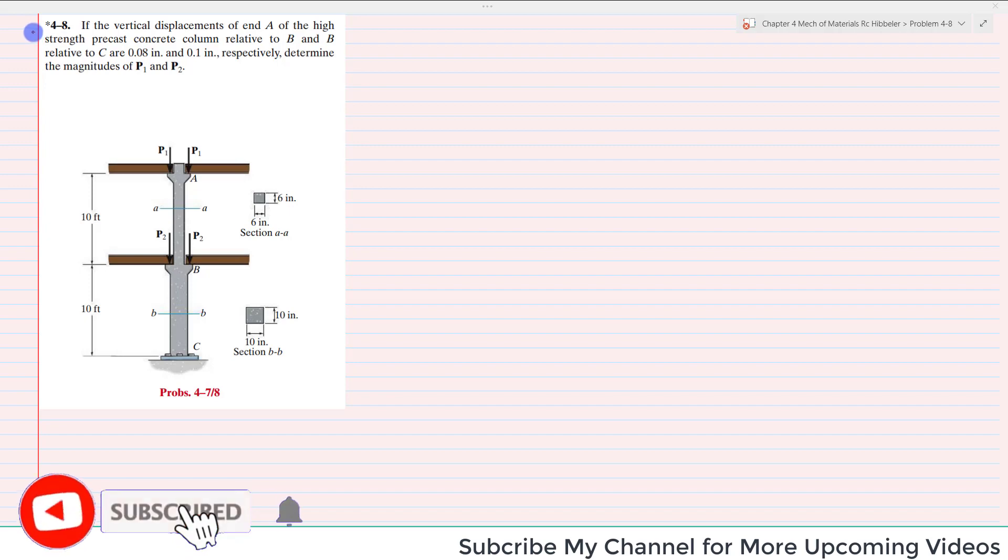Welcome back. Problem 4-8. In this problem, it is given that if the vertical displacement of A of high strength precast concrete column relative to B and B relative to C are 0.08 and 0.1 inch respectively, determine the magnitude of P1 and P2.